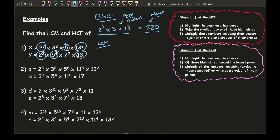Now to find the lowest common multiple for question one. Step one: highlight the common prime bases — which I've done with blue circles. Step two: cancel the lowest power of each highlighted base. So from the twos, cancel 2³; from the fives, cancel the single five; from the thirteens, cancel the single thirteen. Step three: multiply everything that's left — that's 2⁷ × 3² × 5⁴ × 7² × 13².